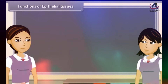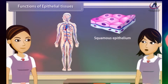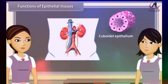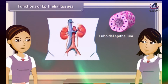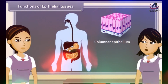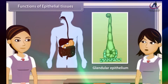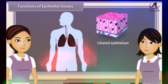Squamous epithelium protects the underlying parts of the body from mechanical injury, entry of germs, chemicals, and also from drying. Cuboidal epithelium helps in absorption, excretion, secretion and also gives mechanical support. The main function of columnar epithelium is absorption and secretion. The main function of glandular epithelium is secretion. The rhythmic, concentrated beating of cilia of ciliated epithelium moves solid particles in one direction through ducts.